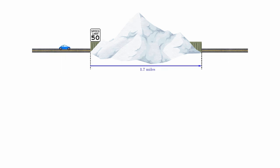Suppose there is a car approaching the tunnel. As it enters the tunnel, the car is traveling at 49 miles per hour. After about 1.9 minutes, or 0.0318 hours, the car emerges, at which time it is traveling 48 miles per hour.